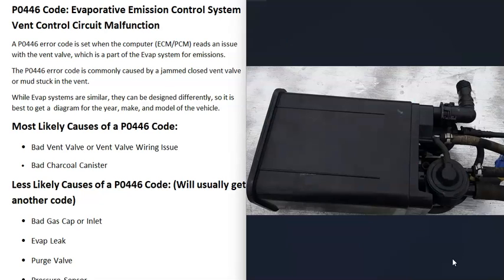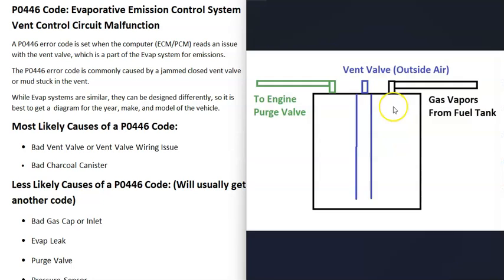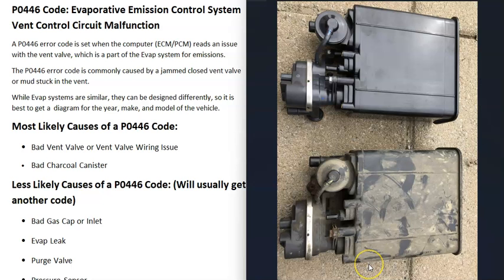Another thing that can cause this code is a bad charcoal canister. These can get clogged up, especially on high-mileage or older vehicles. There is activated carbon — small pellets — inside the charcoal canister that filters vapors going to the engine or the vent valve. If those pellets get clogged up, it can block the flow of gas vapors to the vent valve and cause issues, so a clogged charcoal canister is the next thing on the list.